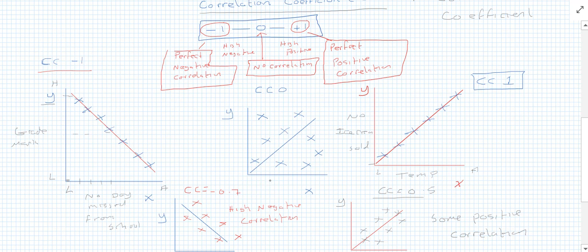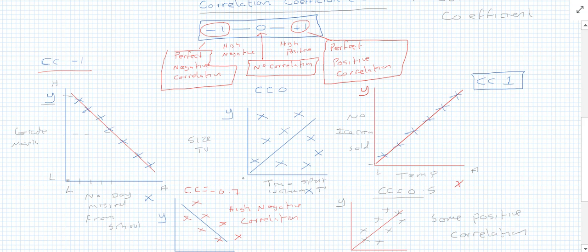An example of no correlation at all: time spent watching TV and the size of the TV. If you surveyed people on how much time they spend watching TV and measured their TV set, you're not generally going to find any correlation. You'd just get random data all over the place — some people have big TVs, some small, regardless of how much they watch.